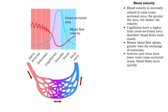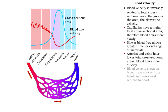Arteries and veins have lower total cross-sectional areas, so blood velocity is greater. Blood velocity slows as blood travels away from the heart and increases as blood leaves capillaries and returns to the heart.